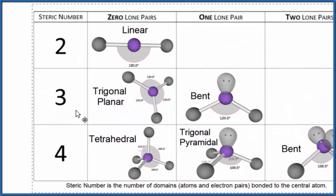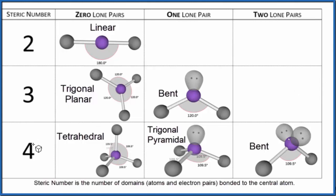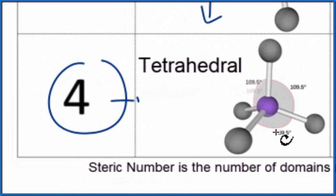So on our table here, we have a steric number of four right here, and we have no lone pairs, zero lone pairs. We go down and right here, and that's the tetrahedral molecular geometry we're talking about. The bond angles should be 109.5 degrees as these four chlorine atoms spread out to be as far away as they can from each other.